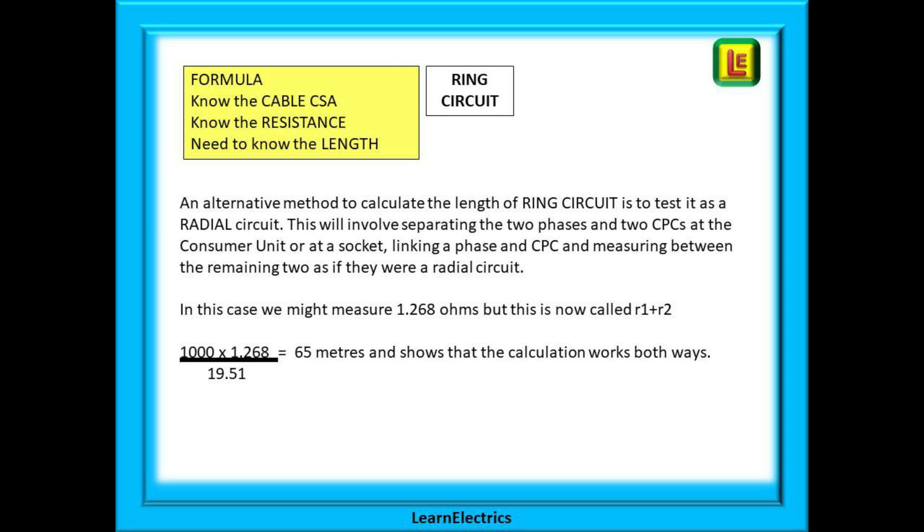This is not R1 plus R2 for the ring circuit. It is called little r1 plus little r2. This method does not use the factor four in the calculation. A thousand multiplied by 1.268 and divided by 19.51 equals 65 meters again.